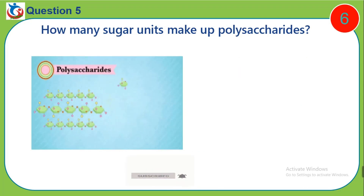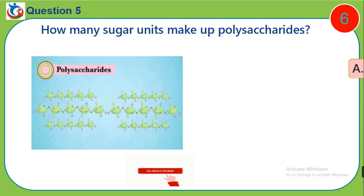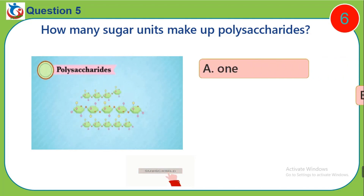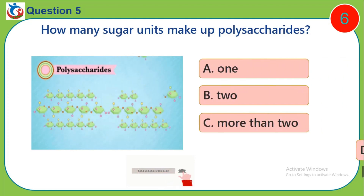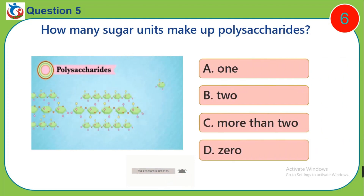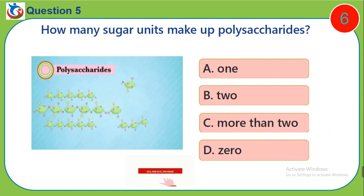Question 5. How many sugar units make up polysaccharides? A. 1. B. 2. C. More than 2. D. 0.